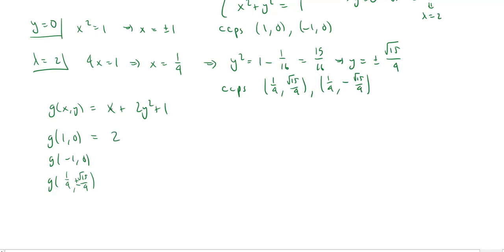When x is 1 and y is 0, you get 1 plus 0 plus 1 is 2. Then when x is negative 1 and y is 0, you get negative 1 plus 1 is 0 plus 0 is 0. And then when x is a fourth and y is either root 15 over 4 or negative root 15 over 4, you get 1 fourth plus twice, when you squared this, you got 15 over 16 plus 1. So this is going to be 15 over 8. So I can write everything over 8. This will be 2 over 8 and 8 over 8. That's 10 over 8 plus 15 over 8 is 25 over 8. And a quick look, we see that is going to be our maximum value. And 0 is going to be the minimum value.